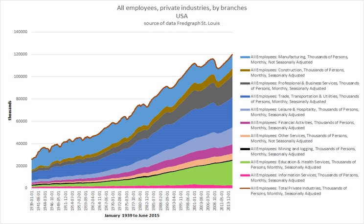Those who work under obligation for the purpose of fulfilling a debt, such as indentured servants, or as property of the person or entity they work for, such as slaves, do not receive pay for their services and are not considered employed. Some historians suggest that slavery is older than employment, but both arrangements have existed for all recorded history. Indentured servitude and slavery are not considered compatible with human rights or with democracy.